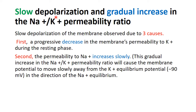There are three main causes of slow diastolic depolarization. First, there is a decrease in membrane permeability to potassium ions during the resting phase. Second, permeability to sodium ions increases slowly, shifting the membrane from near the potassium equilibrium potential of about minus 90 mV toward the positive side — from minus 55 mV toward minus 50 mV. Third, there is a slight increase in the entry of positively charged calcium ions contributing to diastolic depolarization.